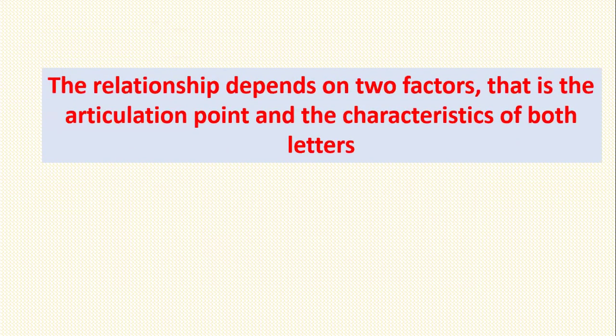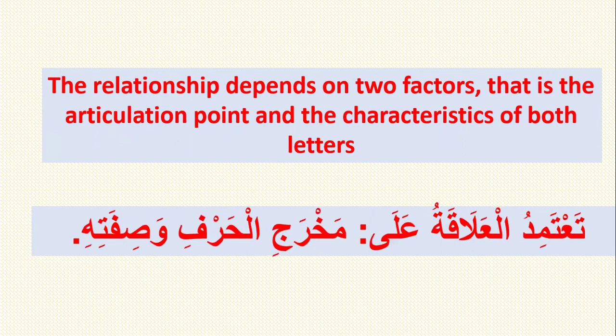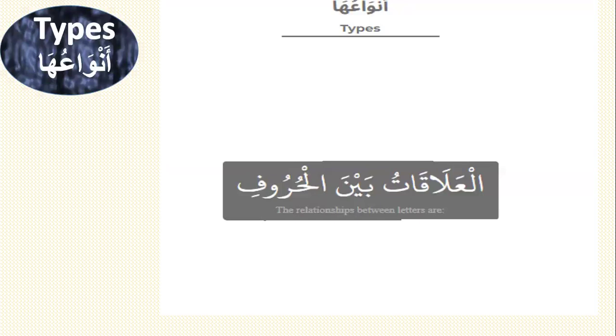The relationship depends on two factors: the articulation point and the characteristics of both letters. For example, for lam and ha, look at the articulation point and the characteristics. When you know both of them, you can find the relationship between the two letters.